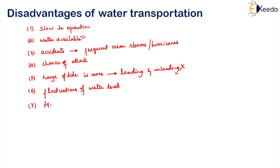If there are any mountainous rivers on the route, or if there are any rapids or waterfalls, these will hinder the movement of ships or boats. These are some of the major disadvantages which you can come across in water transportation. So I hope you have understood what is water transportation and what are its advantages and disadvantages.